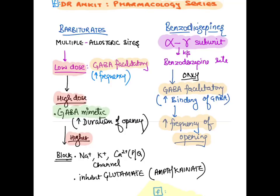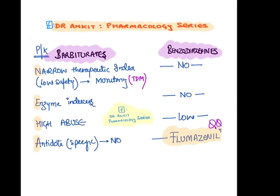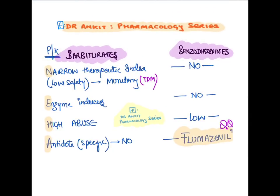Regarding pharmacokinetics: barbiturates have a narrow therapeutic index, requiring TDM (therapeutic drug monitoring). They are enzyme inducers, highly abusive, and have no antidote. Benzodiazepines, by contrast, require no monitoring, are safe, are not enzyme inducers, have low abuse potential, and have a specific antidote — flumazenil.